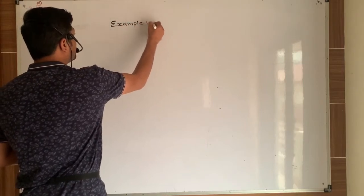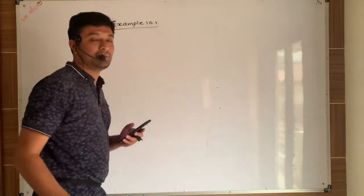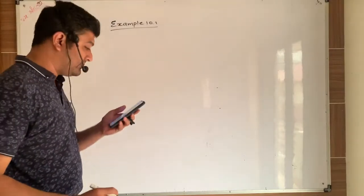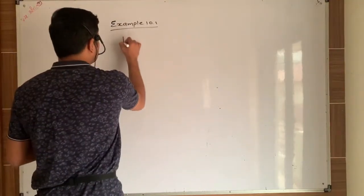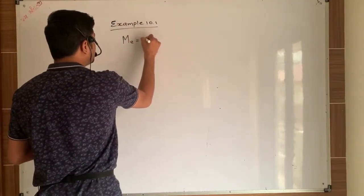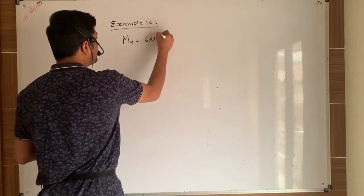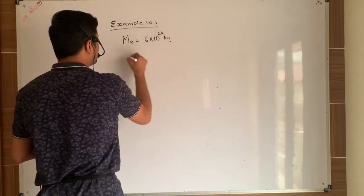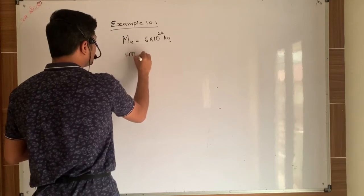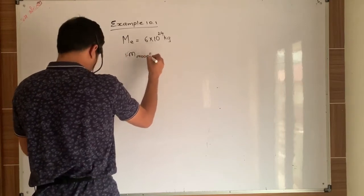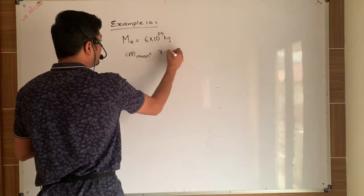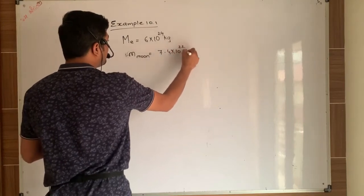Example 10.1. The question will be appearing on the screen. In the question it is given to us that mass of earth is 6 into 10 raise to 24 kg. Even the mass of moon is given to us and it is given as 7.4 into 10 raise to 22 kg.